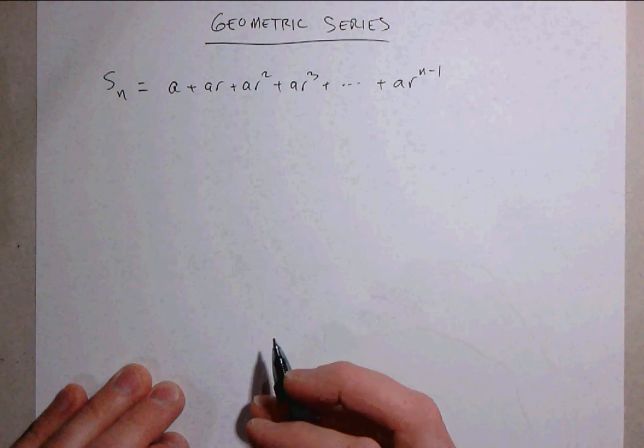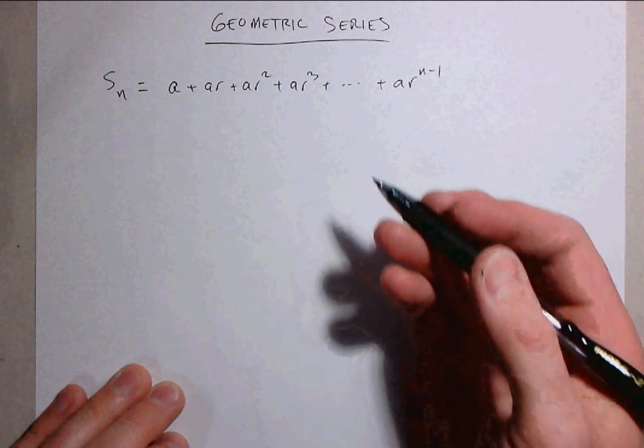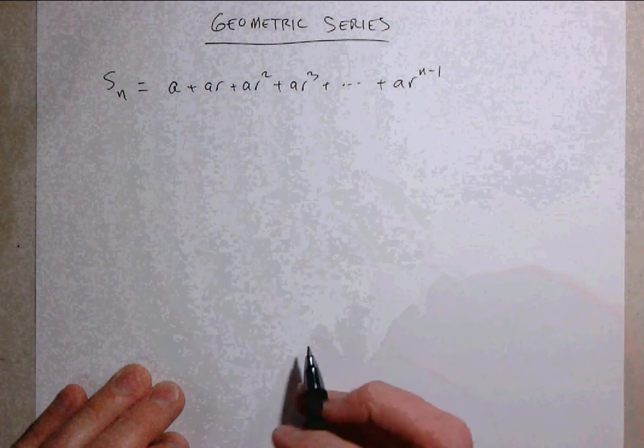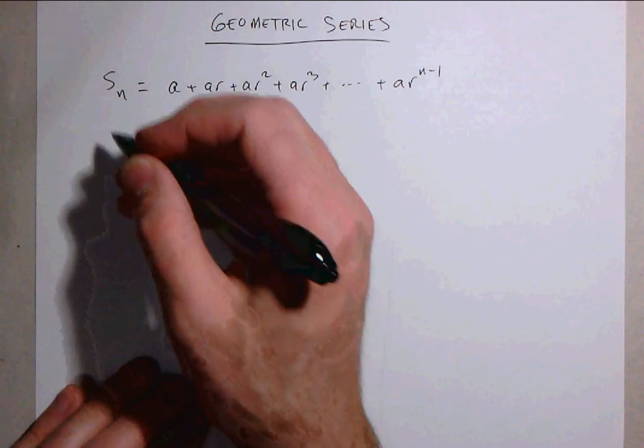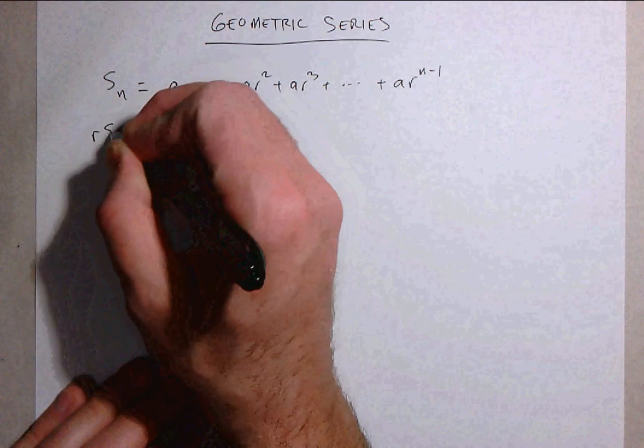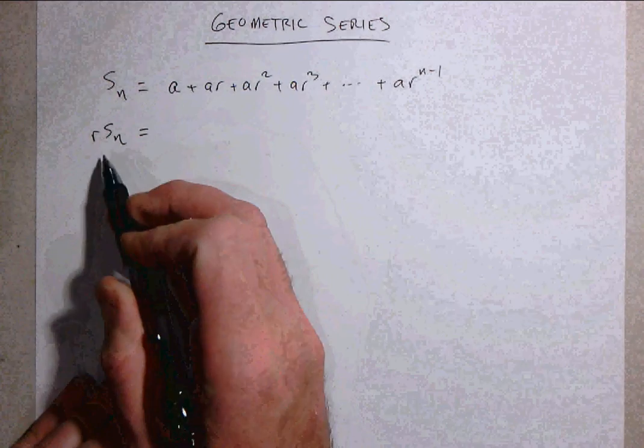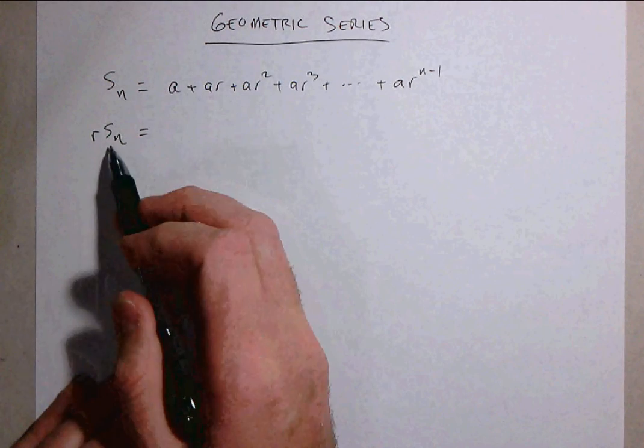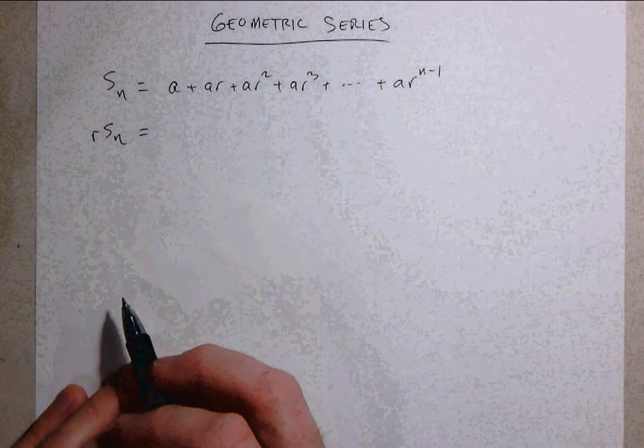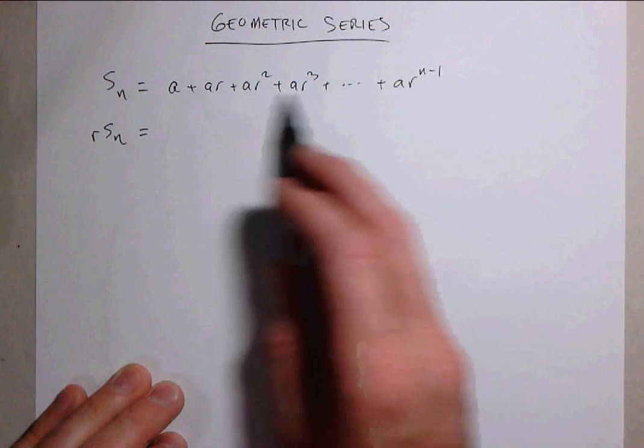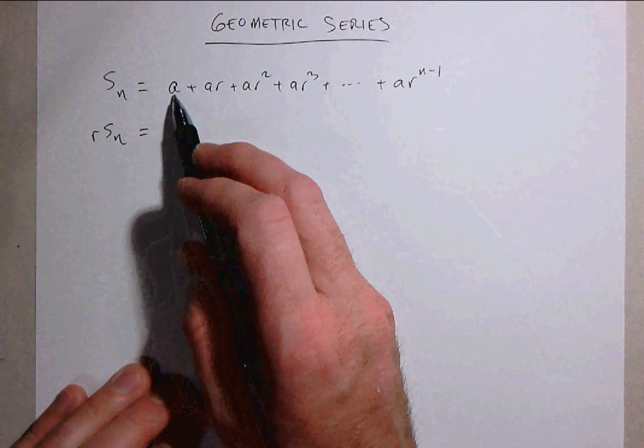The trick is the so-called shifting and subtracting technique. So we are going to do something clever. We're going to multiply this entire formula by r. Now on this side that gives us r times s sub n. On this side we're going to multiply term by term. a times r is ar.